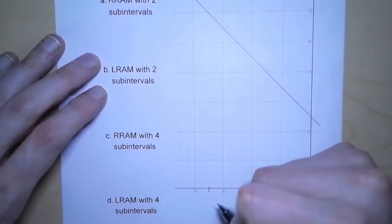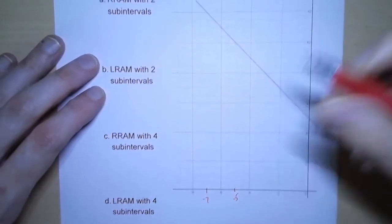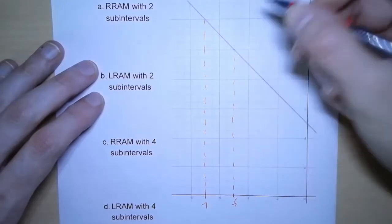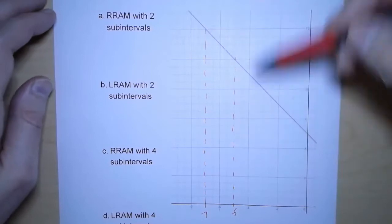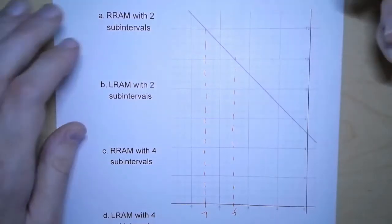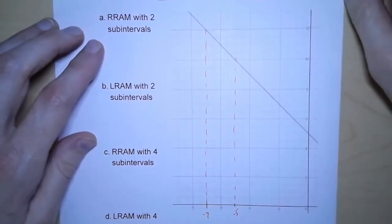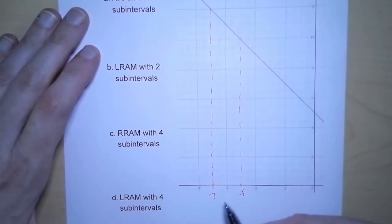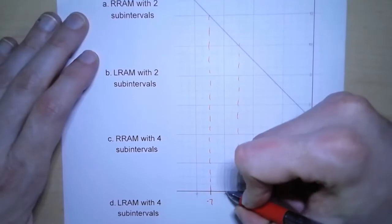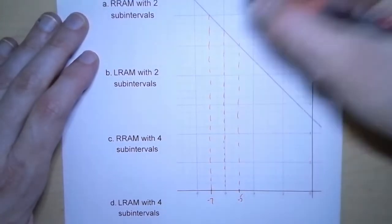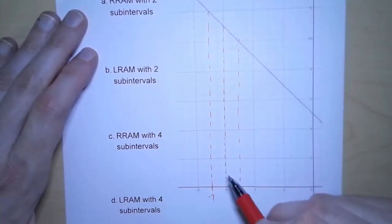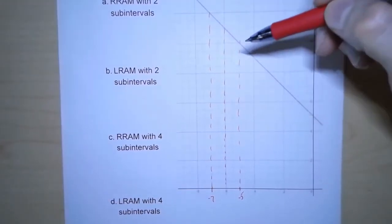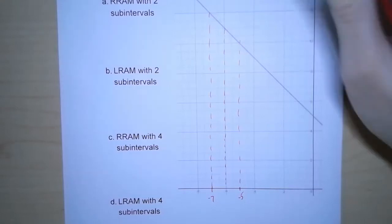So down here is negative 7 and down here is negative 5 — we have from here to here. Now what we want to do is take this region and break it up into strips. The number of strips is going to be indicated by the problem. Part A says we want to do what's called RRAM with two subintervals. So we're going to take this from negative 7 to negative 5 and break it into two pieces at negative 6. So we have two strips: the first one from negative 7 to negative 6, the second from negative 6 to negative 5. We want to treat each strip like a rectangle — it's not exact, that's why we call this estimating the area.